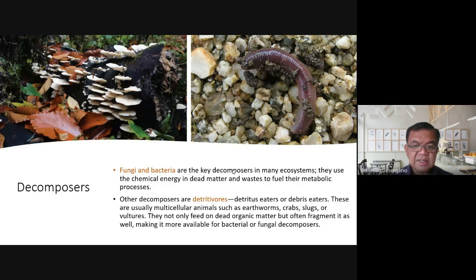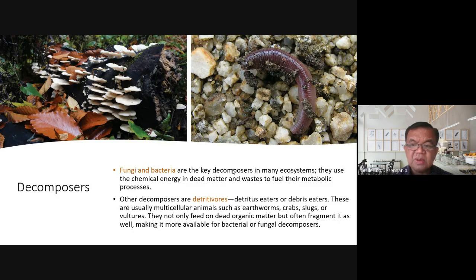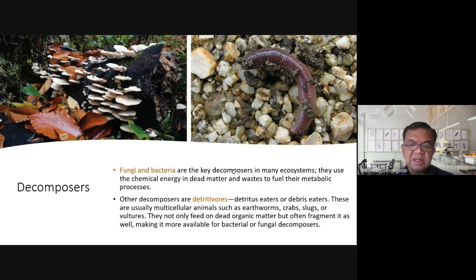Other decomposers are detritivores — debris eaters. These are usually multicellular animals such as earthworms, crabs, slugs, or vultures. They are called detritivores because they can consume rotting matter. This is an important role in the ecosystem.